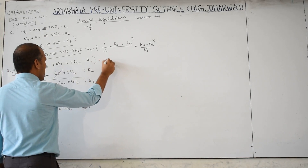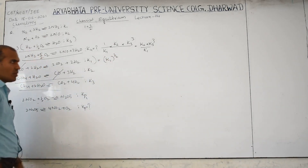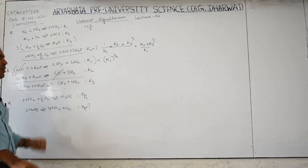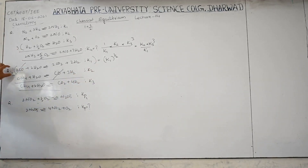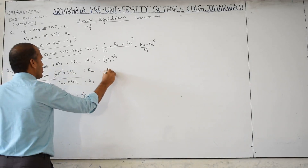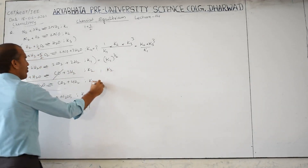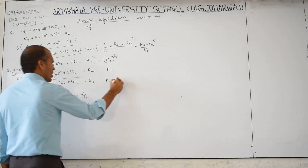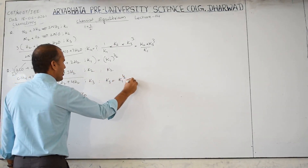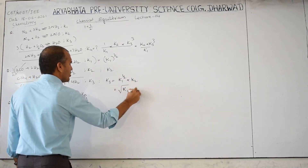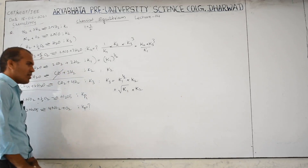So this equation gives K₁^(1/2) because the whole equation was multiplied by 1/2. The second equation is unchanged, giving K₂. Therefore K₃ = K₁^(1/2) × K₂. This may also be written as √K₁ × K₂.